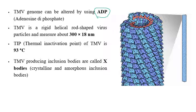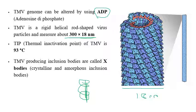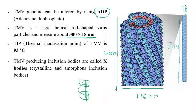TMV is a rigid helical rod-shaped virus particle that measures about 300 nm in length and 18 nm in diameter (width). The width — or diameter — is 18 nanometers, and the length is 300 nanometers. This is a very important measurement to remember.